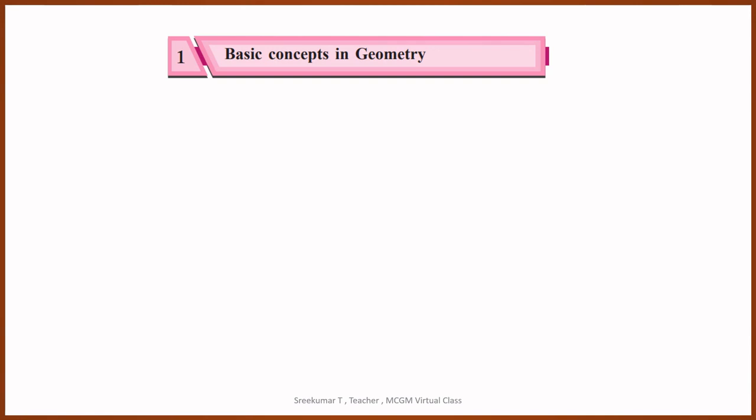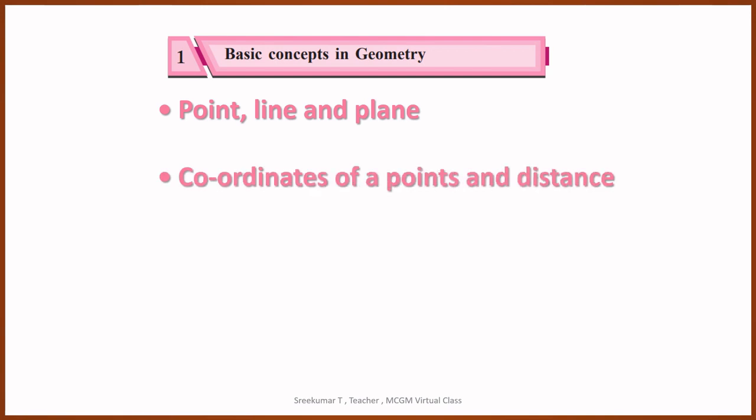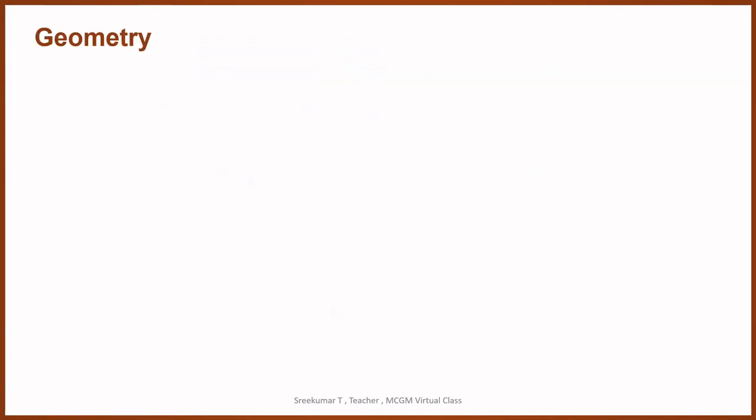Let us get into the textbook to know what is the first topic. The first topic is basic concepts in geometry. The same topic was there in sixth standard, and luckily point, line, plane, these things are also very much known to you. Something new is there, that is coordinates of a point and distance, then the concept of betweenness, the concept of conditional statements, and what is meant by proof.